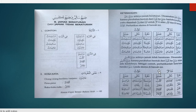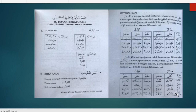Kita lanjut ke Jama' Taksir. Untuk Mudzakkar — Mufrad, Musanna, Jama': Kitabun, Kitabani, Kutubun. Daftarun, Daftarani, Dafatir. Qalamun, Qalamani, Aqlamun. Waladun, Waladani, Aulad. Mirsamatun, Mirsamatani, Marasim — ini yang Mu'annas. Lalu Bintun, Bintani, Banat. Ustadzatun, Ustadzatani, Asatidza. Tilmiydzatun, Tilmiydzatani, Talamidza. Ini di antara bentuk-bentuk dari Jama' Taksir.